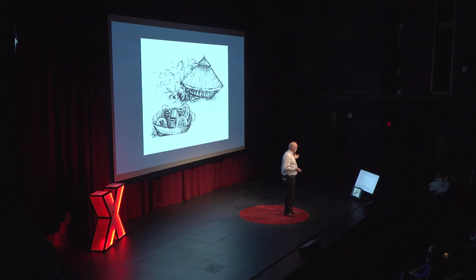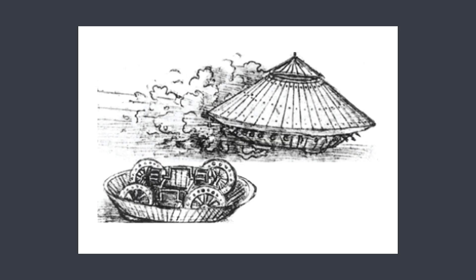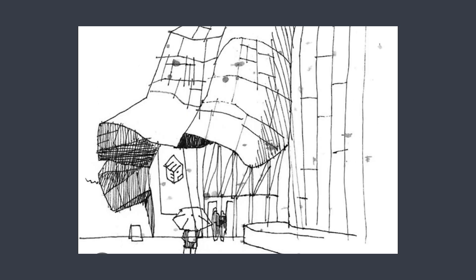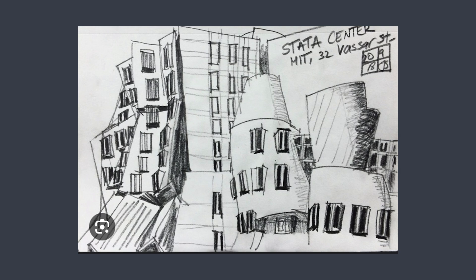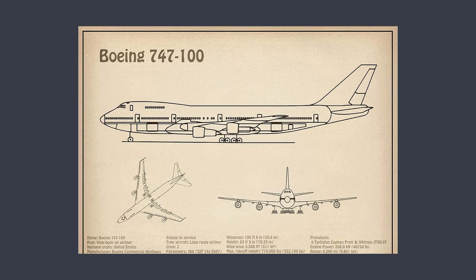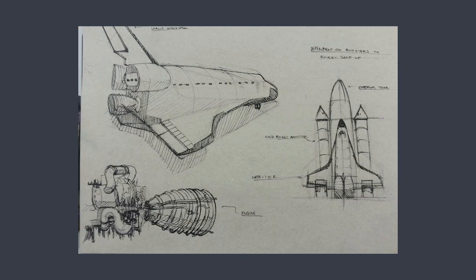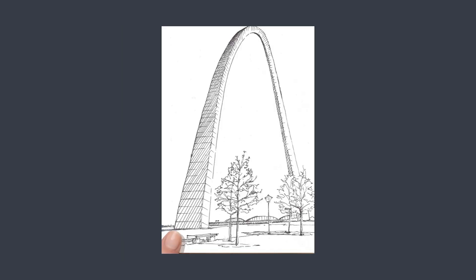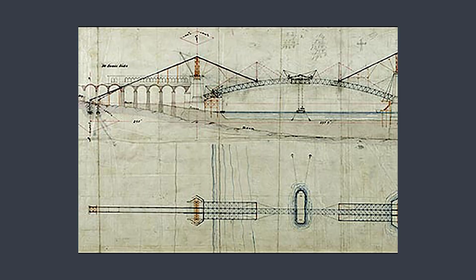Some examples: Leonardo da Vinci, perhaps one of the greatest designers, sketchers, and inventors of all time. Frank Gehry — his projects all begin with simple hand sketches and they are digitally designed. The 747, the Space Shuttle, the St. Louis Arch, and my favorite, the Eads Bridge.